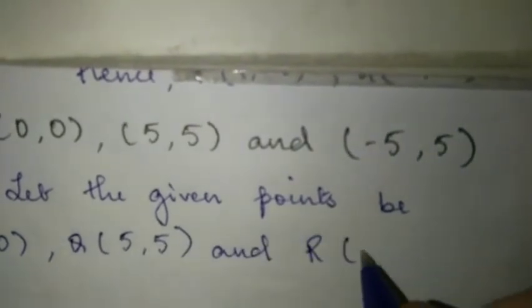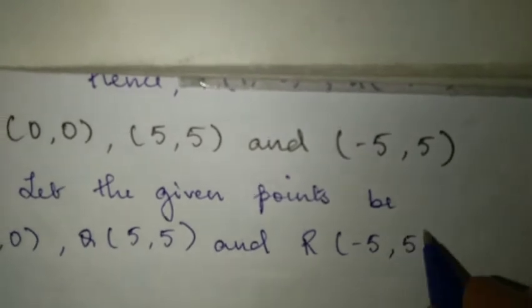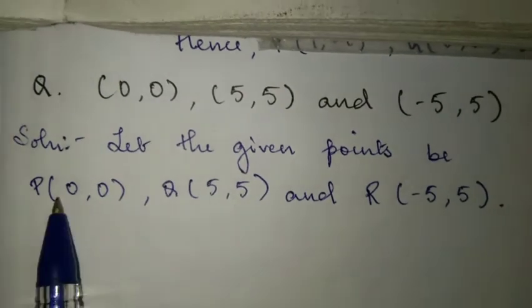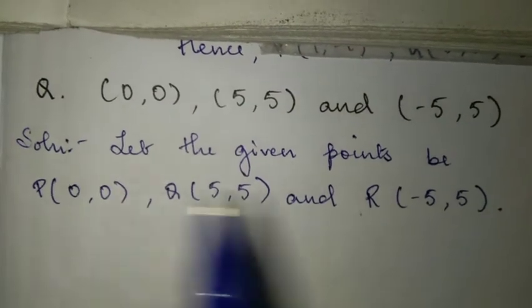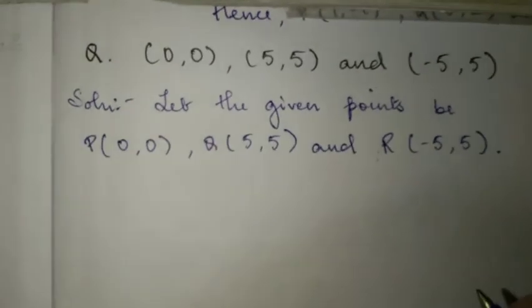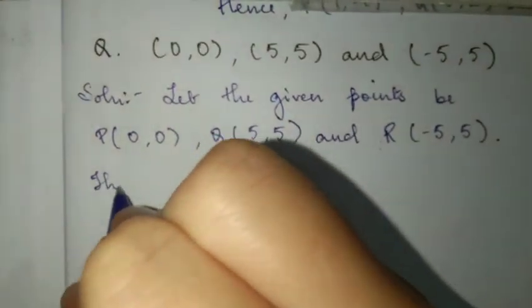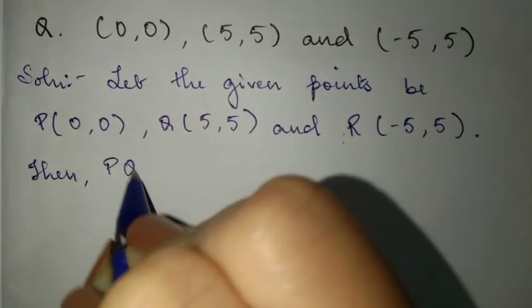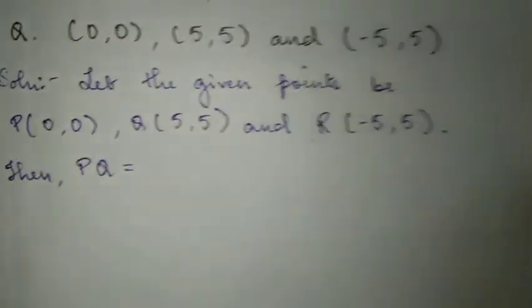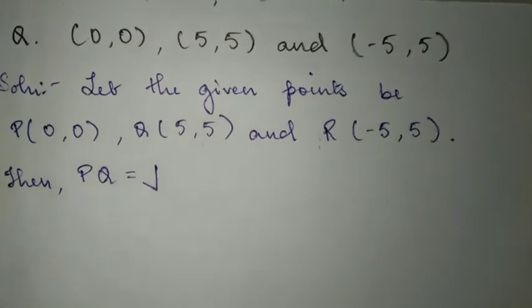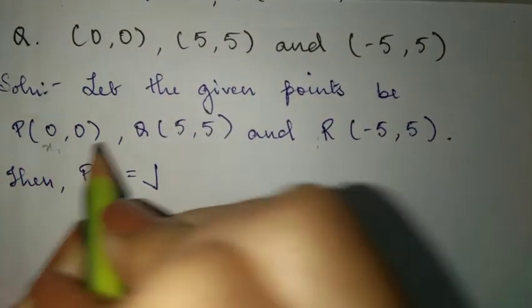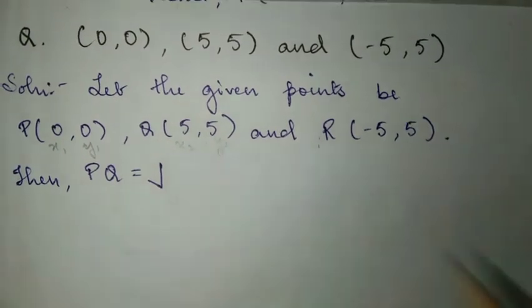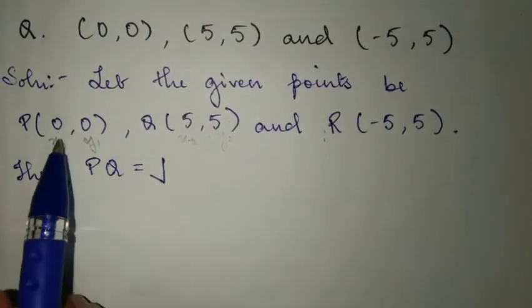Let the given points be P, Q, and R. Now, for PQ we'll use the distance formula. P and Q - we can choose either one. Q can be X2, Y2 and P can be X1, Y1. The answer will be the same.